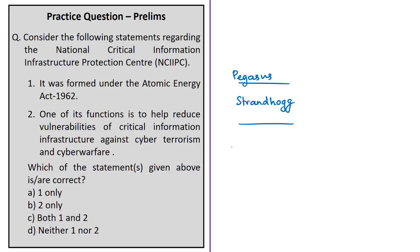With this, we come to the end of the analysis of this news article. We saw the issue mentioned in the article, the National Critical Information Infrastructure Protection Centre, the meaning of critical information infrastructure, the surface web, deep web, and dark web, and what can be done to minimize damage and prevent such attacks in the future.